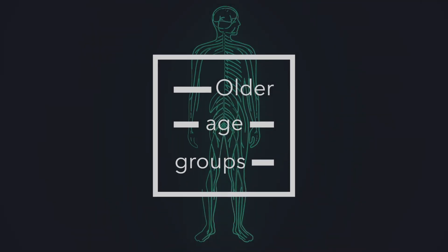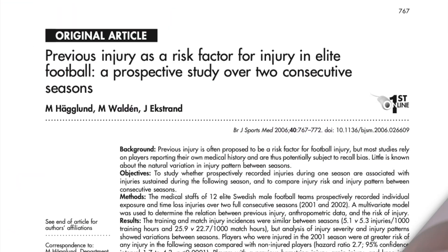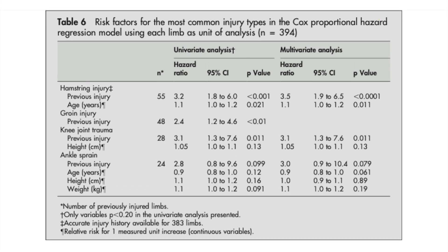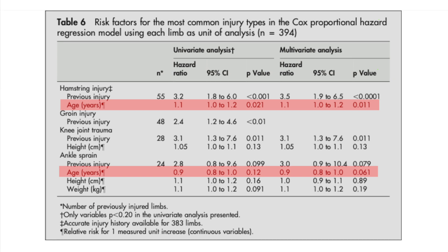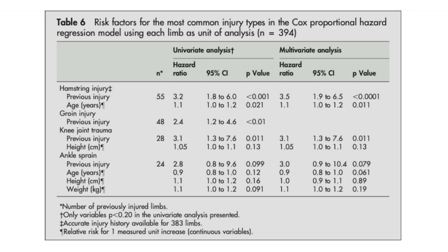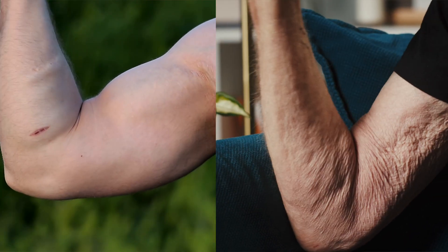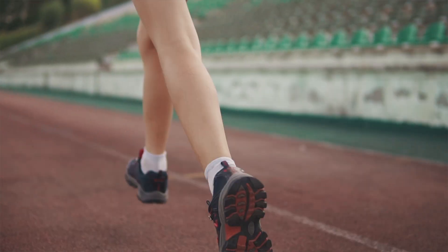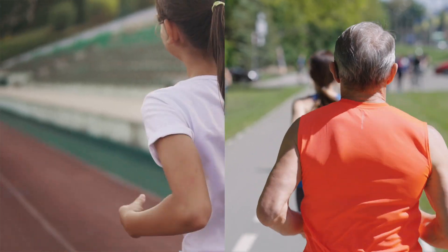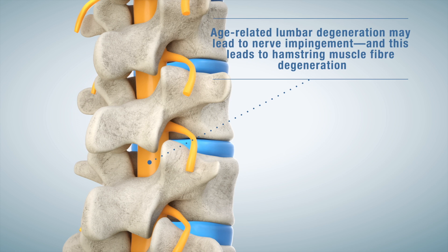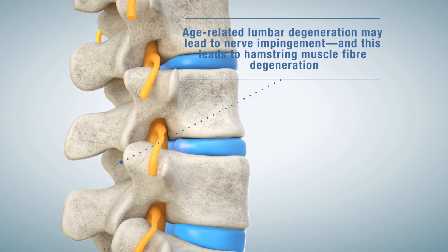Increasing age seems to be a potential risk factor for muscle injuries according to multiple studies. Some research has shown that athletes over the age of 23 are between 1.3 to 3.9 times more likely to sustain a muscle injury than younger players, while athletes over 25 are 2.8 to 4.4 times more likely. Several theories have been proposed to explain this. One suggests that ageing correlates with a reduction in muscle cross-sectional area, reducing the muscle's capacity to generate tension and resist loads before failure. Another theory, specific to the hamstring muscle group, is that age-related lumbar degeneration leads to L5 and S1 nerve impingement, subsequently leading to hamstring muscle fiber degeneration and ultimately hamstring injury.